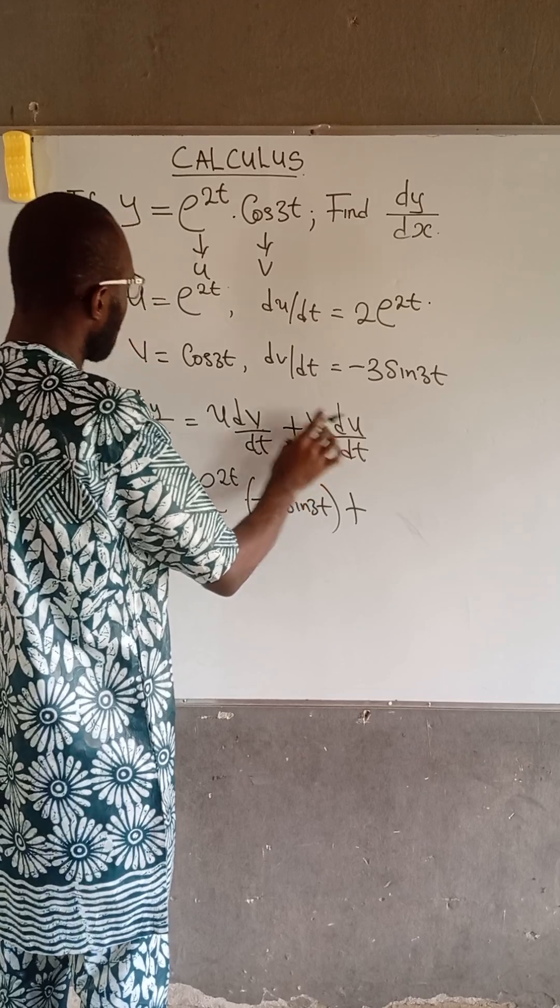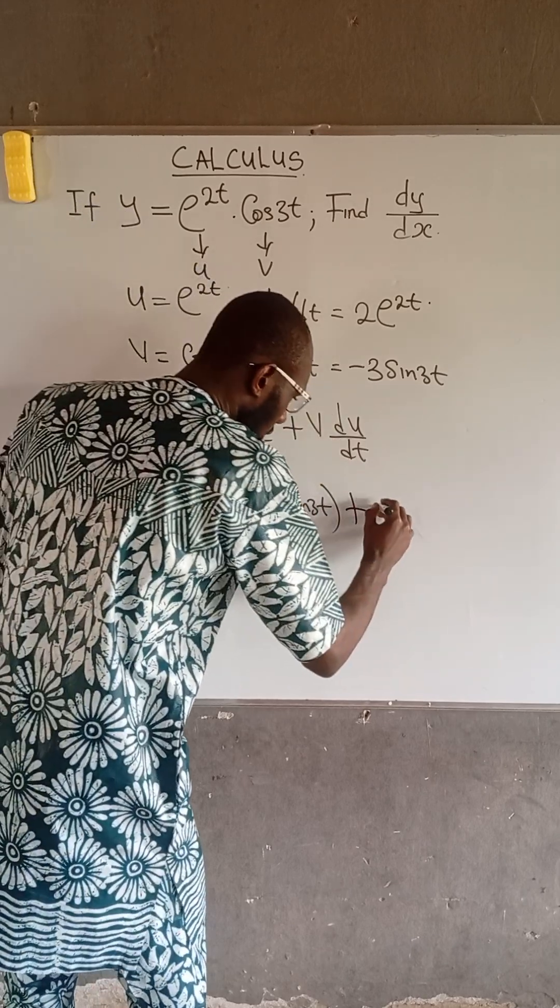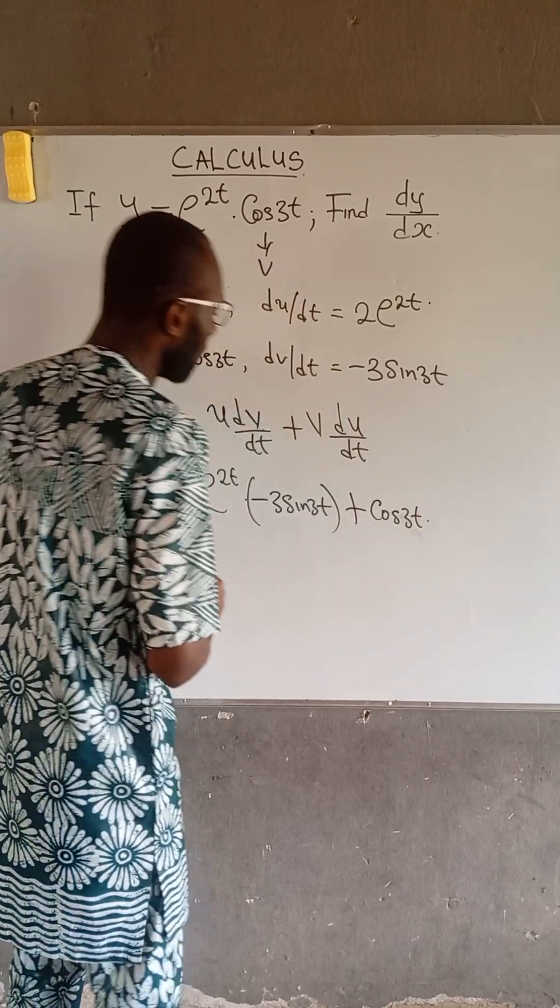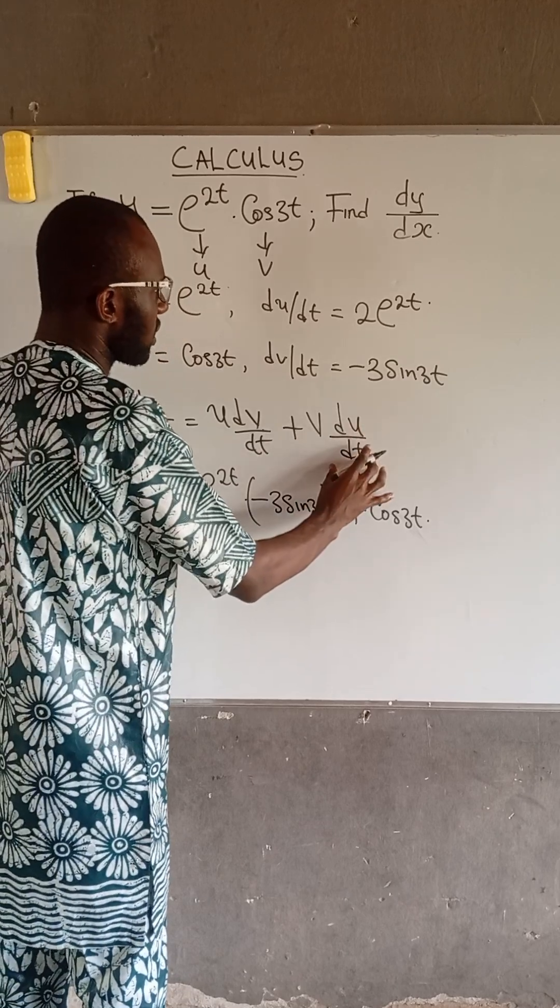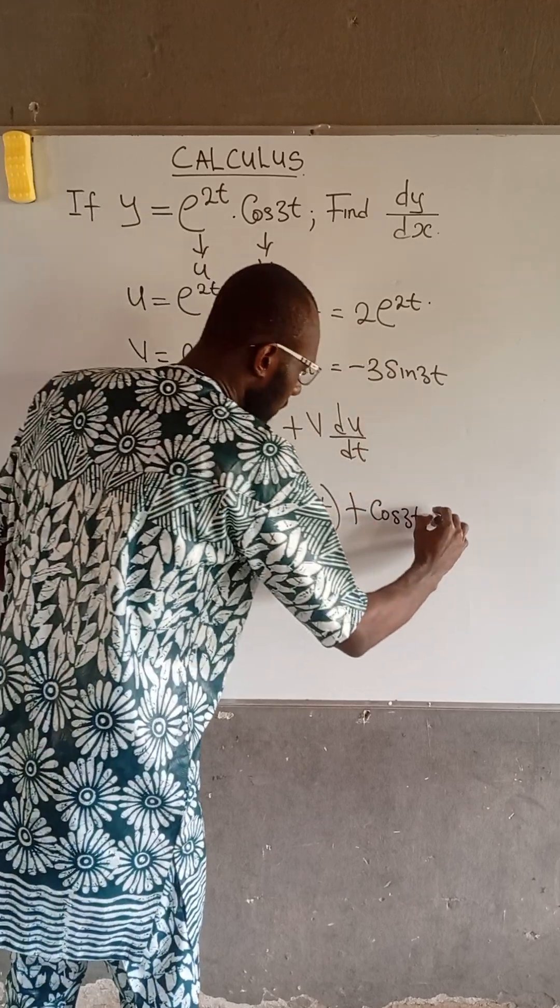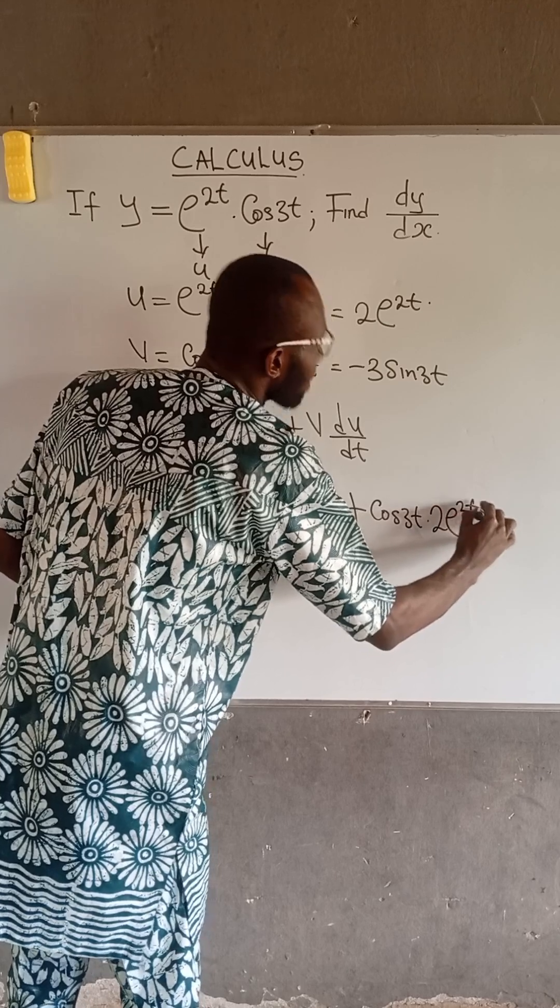Now, the value of v is cos 3t, so we have cos 3t multiplied by du over dt which is 2 multiplied by e to the power of 2t.